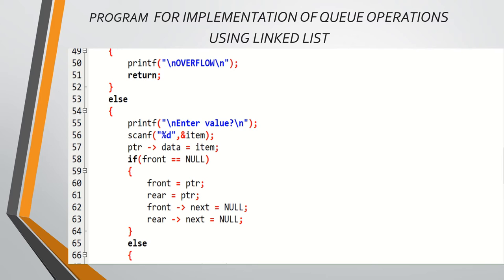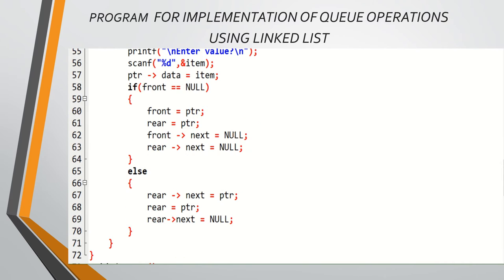If front equals null, it means this is the first node entering the queue, so front equals ptr and rear equals ptr. For the first element, front and rear point to the same node, and front->next and rear->next are set to null since it is a single element. If front is not null, it jumps to the else statement: rear->next equals ptr and rear equals ptr, meaning the new node is placed at the rear end, since insertion always takes place at the rear.